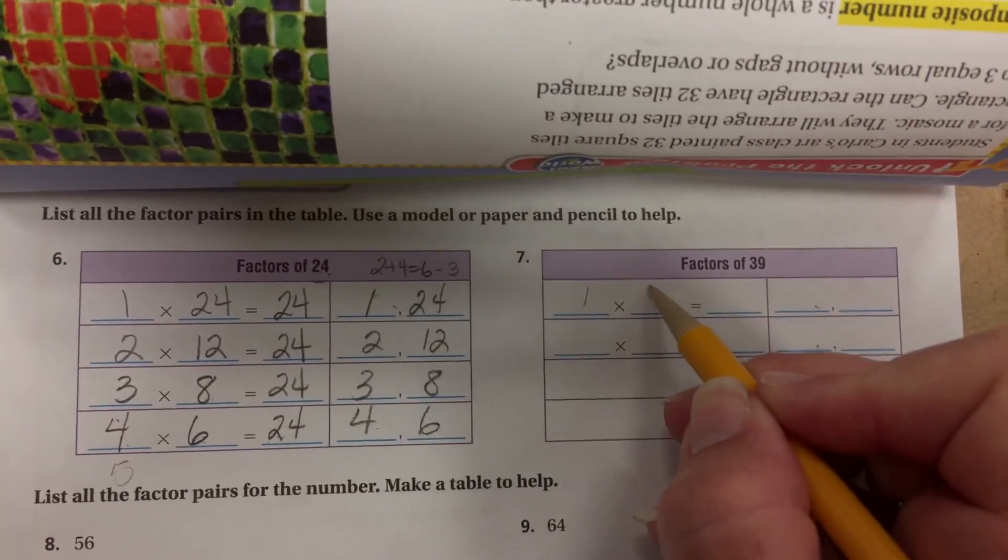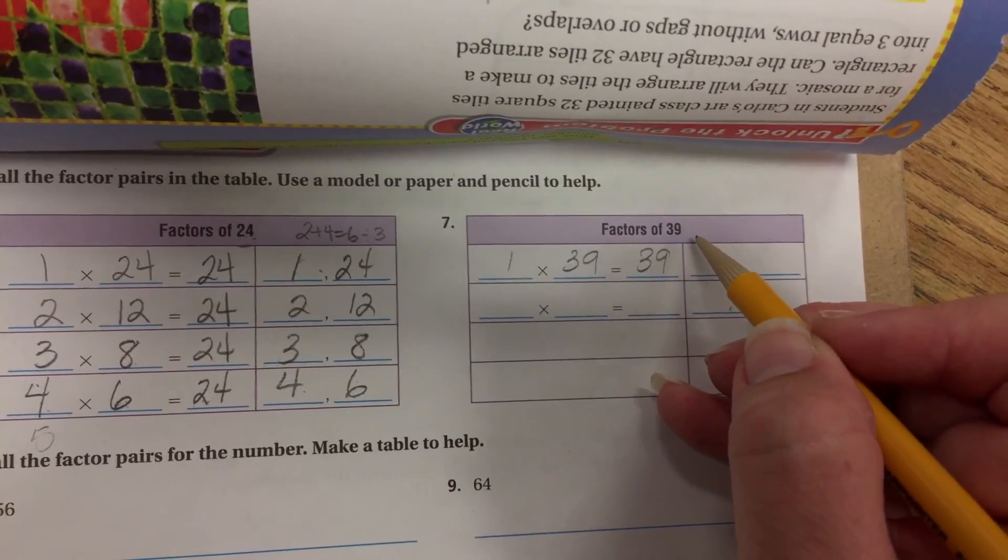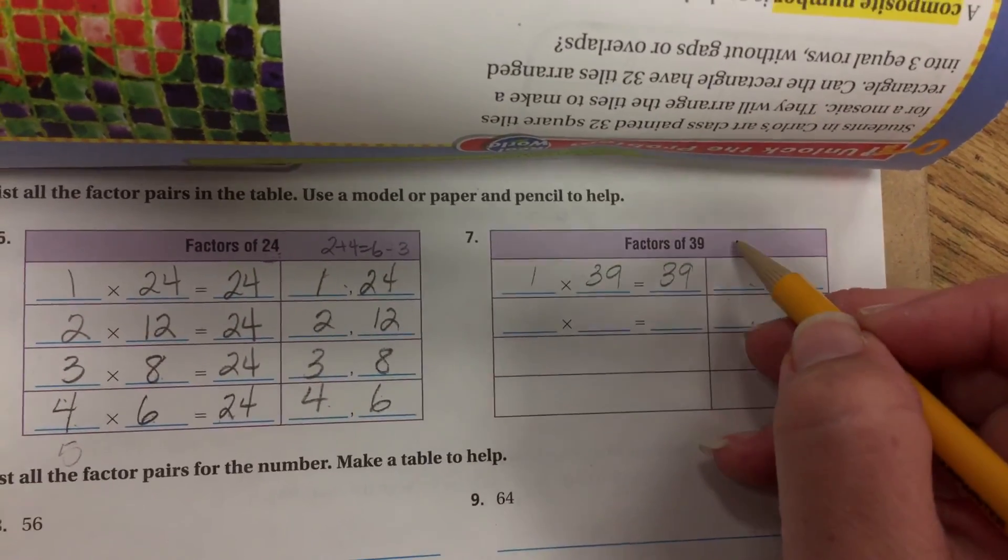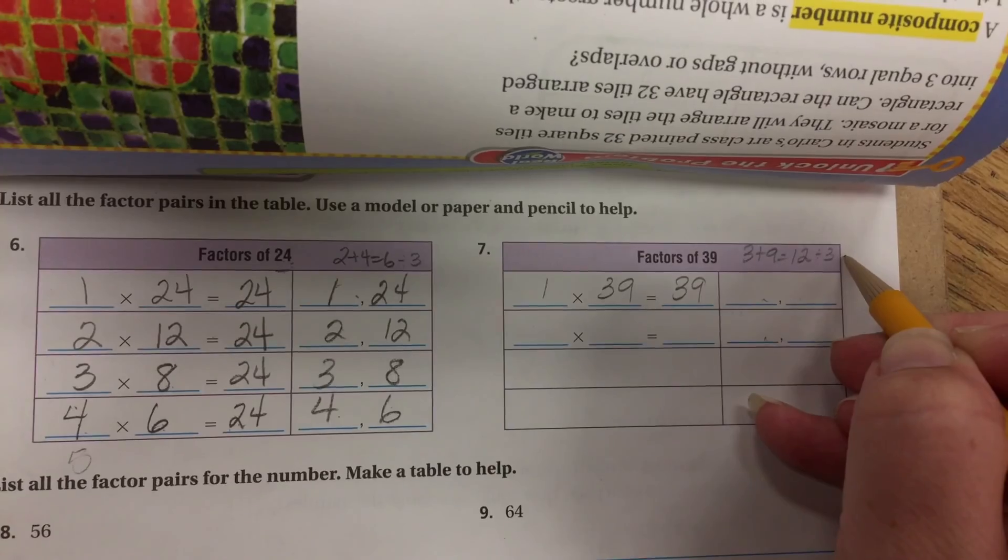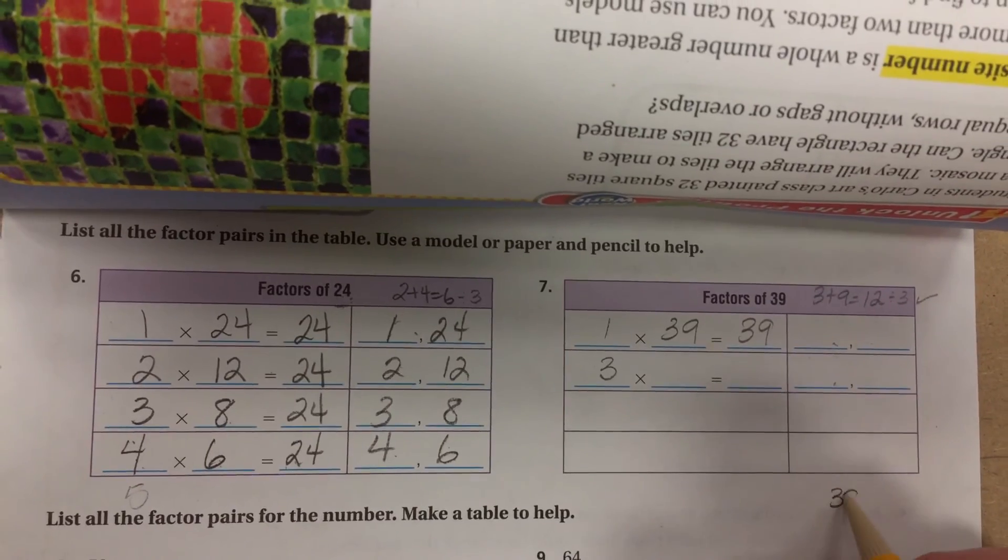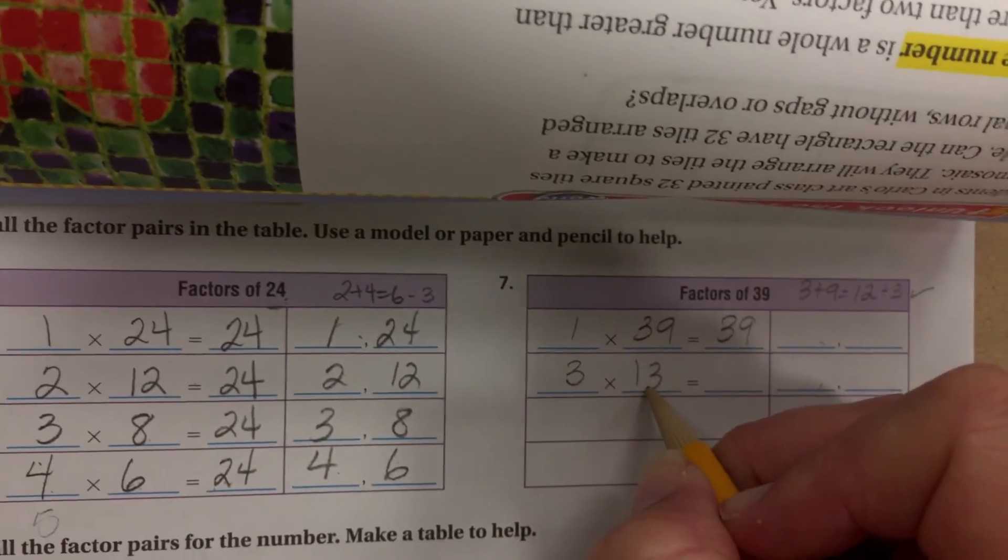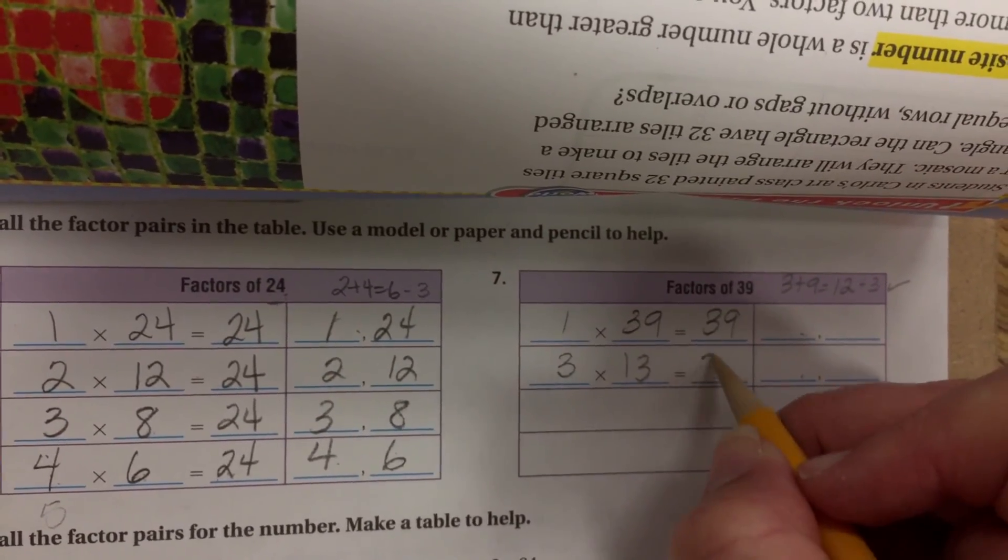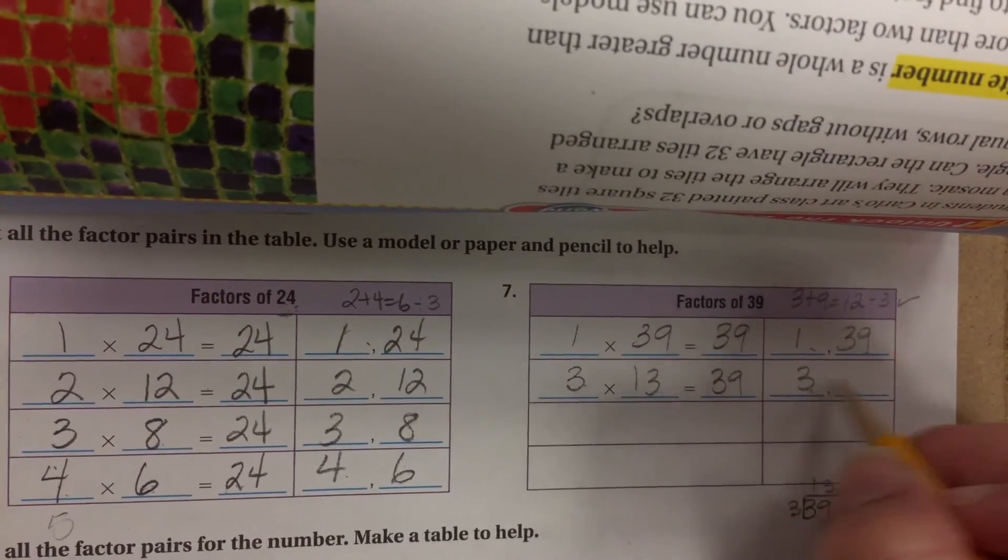So obviously 1 times 39 is 39. Is 39 divisible by 2? Nope. Is 39 divisible by 3? Well, 3 plus 9 is 12. Is 12 divisible by 3? Yes, it is. I don't know how to do that one. So I'm going to come over here. 39 divisible by 3. 3 goes into 3 once. And 3 goes into 9 three times. So 1 and 13. So 13 times 3 is 39. And therefore my factors are 1 and 39, 3 and 13.